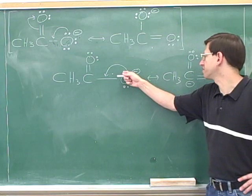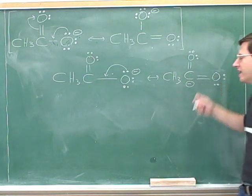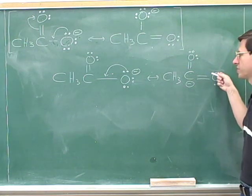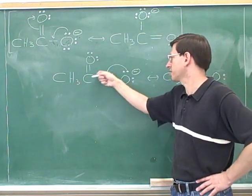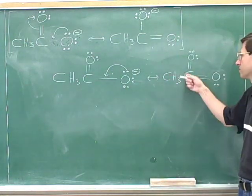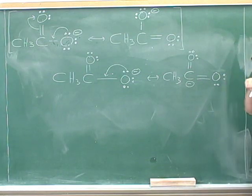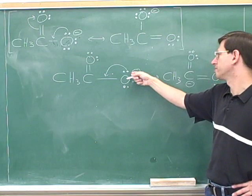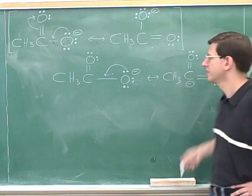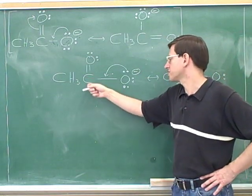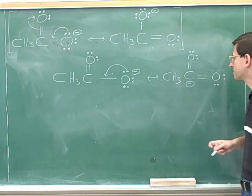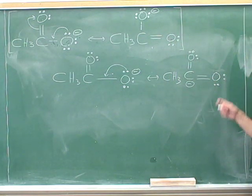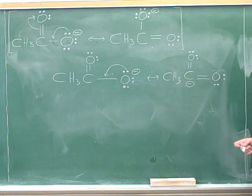Well, we could erase this lone pair and turn it into a pi bond. Since this oxygen is losing electrons, it would go from negative to a neutral charge, and since this carbon has electrons coming towards it, it would go from neutral to a negative charge. However, when you look at this, you'll see that this is really illegal and invalid. You're not allowed to draw this.